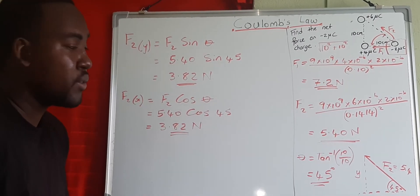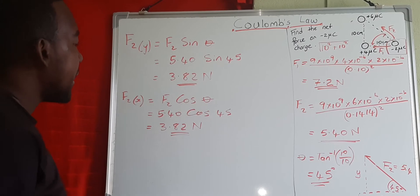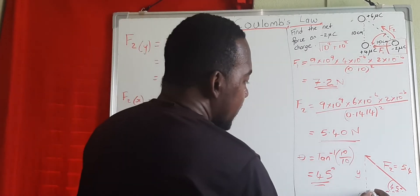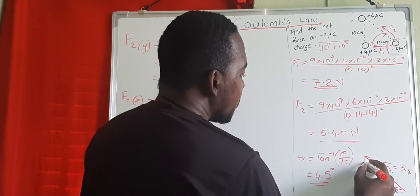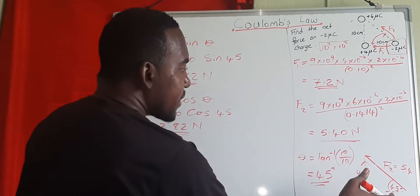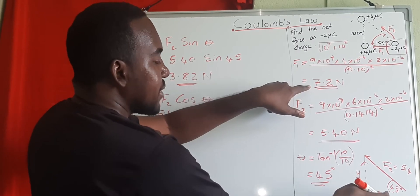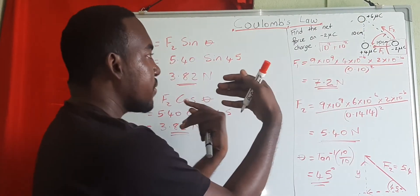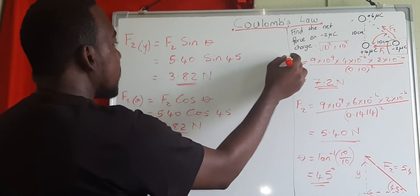Looking at the directions: the x component of F2 and F1 are both going in the same direction — both pointing to the left. So we can now find the net force.